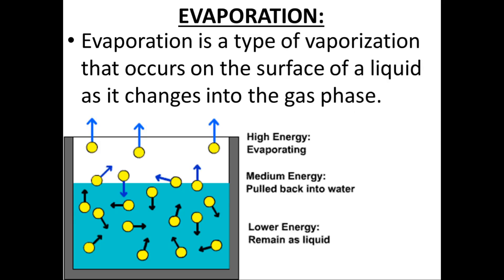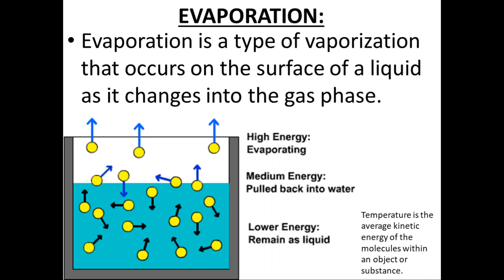Let's begin with a definition of evaporation. Evaporation is a type of vaporization that occurs on the surface of a liquid as it changes into the gas phase. Temperature is the average kinetic energy of the molecules within an object or substance.